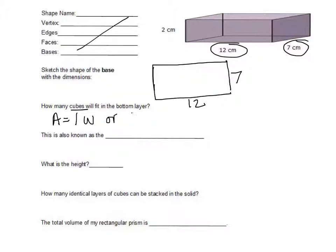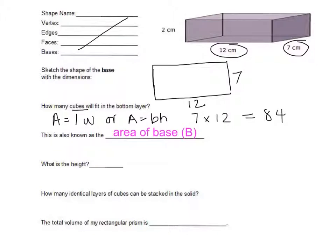So what we need to do is figure out how many cubes will fit in the bottom layer. So we know that the area of a rectangle is length times width, or the area is equal to base times height. And so we have 7 times 12, and that will equal 84.